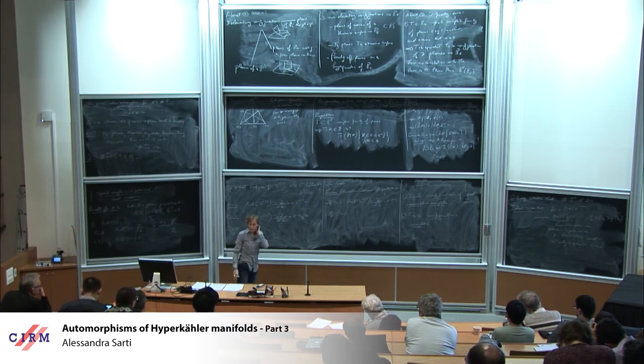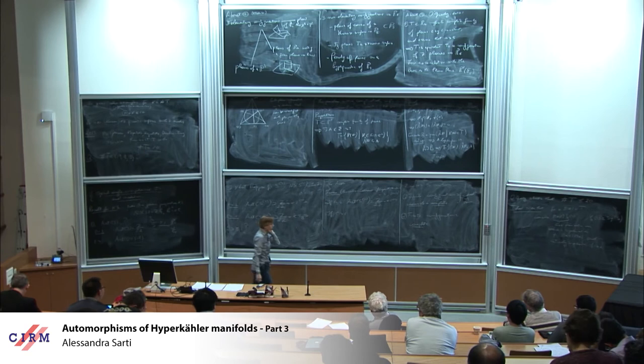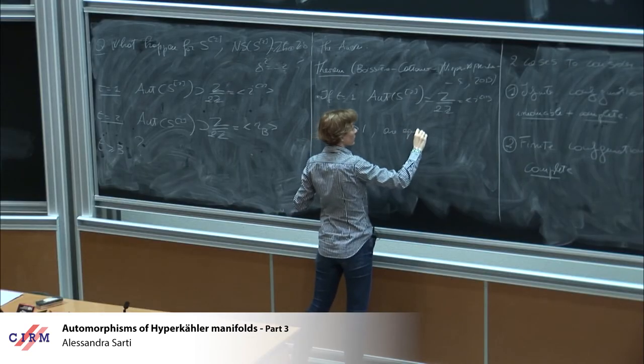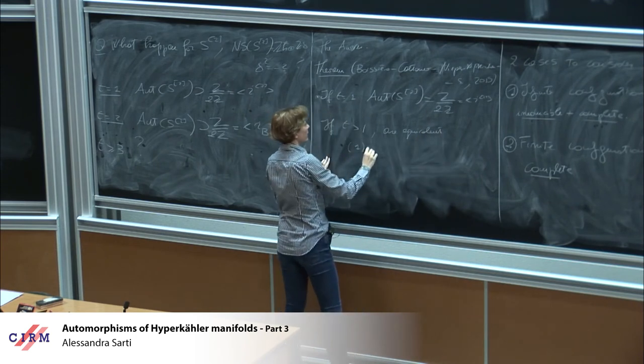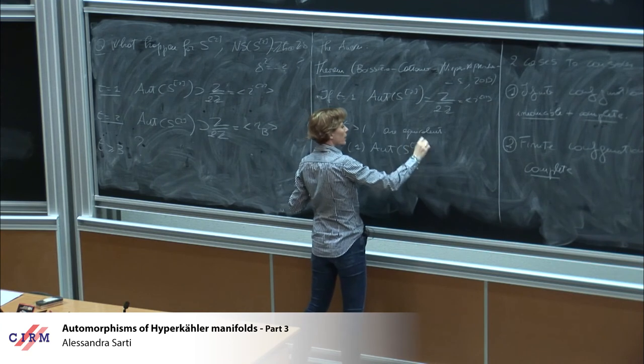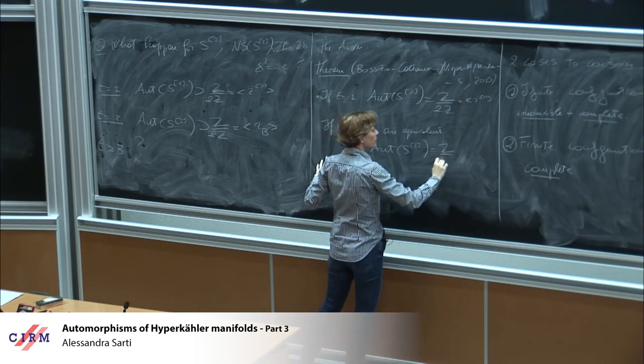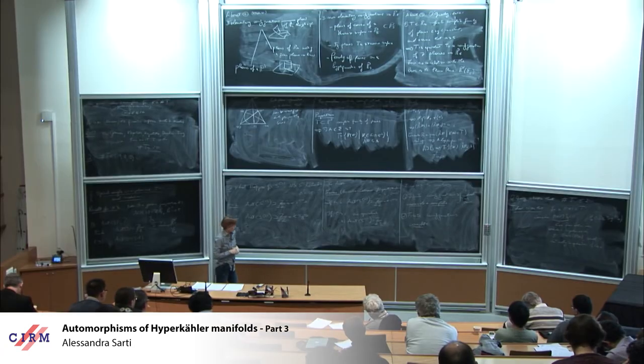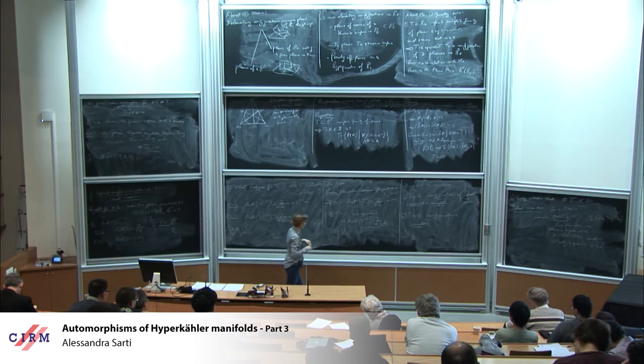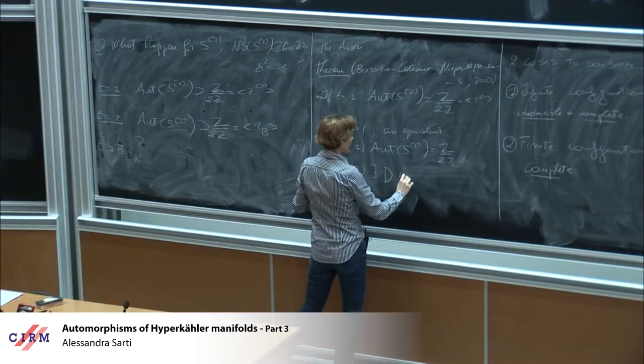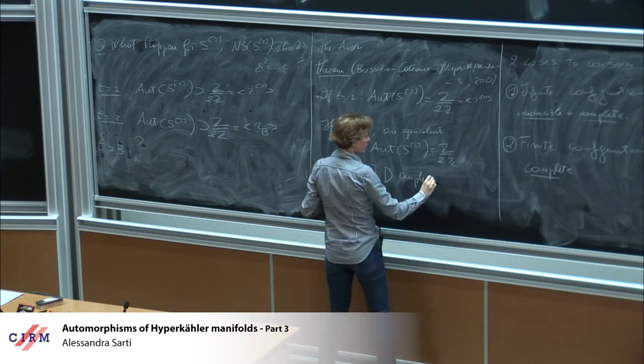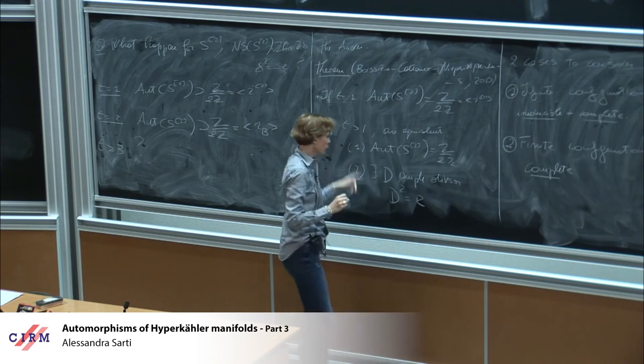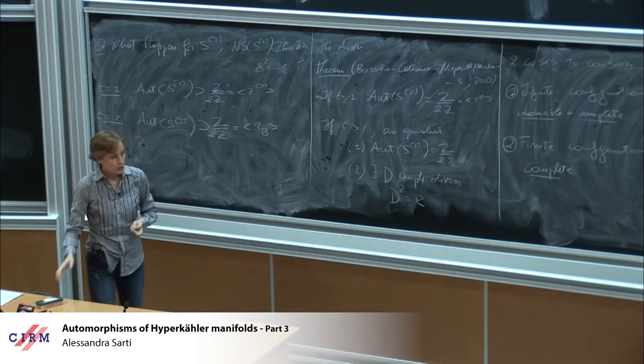So does it happen that for t equal to 1 I have this and otherwise nothing? Well the answer is already no. We know already because for t equal to 2 we know that we have a Beauville involution. And we will see that in fact there are many t for which we have involutions. So let me break down. So what happened? So it's a question what happened where I have always this assumption of genericity.